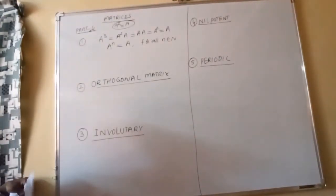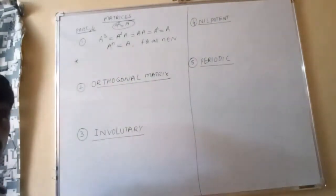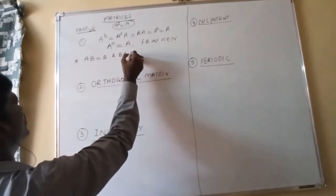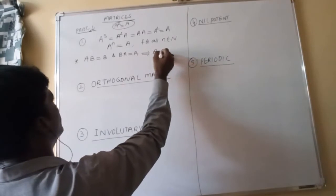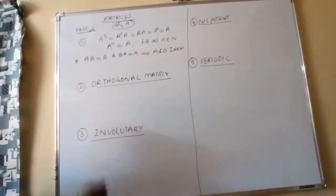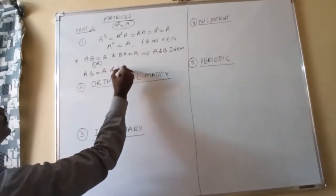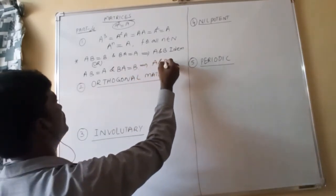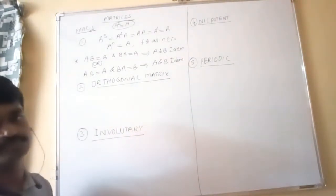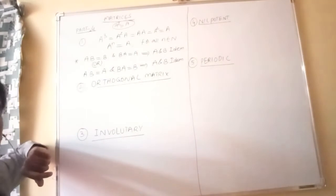One more definition: if A and B are two square matrices satisfying AB = B and BA = A, then A and B must both be idempotent. Similarly, if AB = A and BA = B, then A and B are also idempotent. By using these conditions we can prove A² = A and B² = B, hence A and B are idempotent matrices.